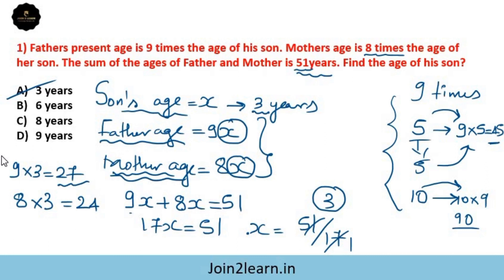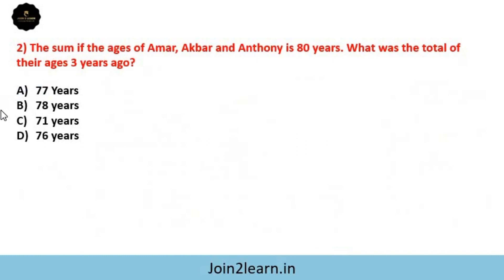Cross-verifying: father's age is 9x = 27, mother's age is 8x = 24. 27 plus 24: 7 plus 4 is 11, carry 1, 2 plus 2 plus 1 is 5, giving 51 years. So the answer is verified and the option is the right answer.